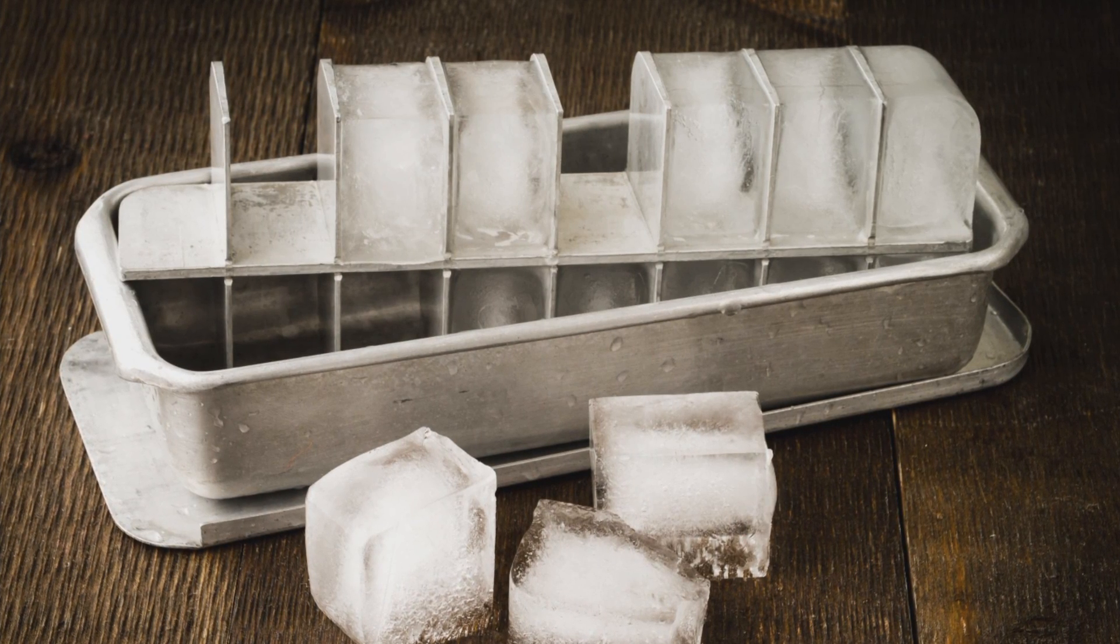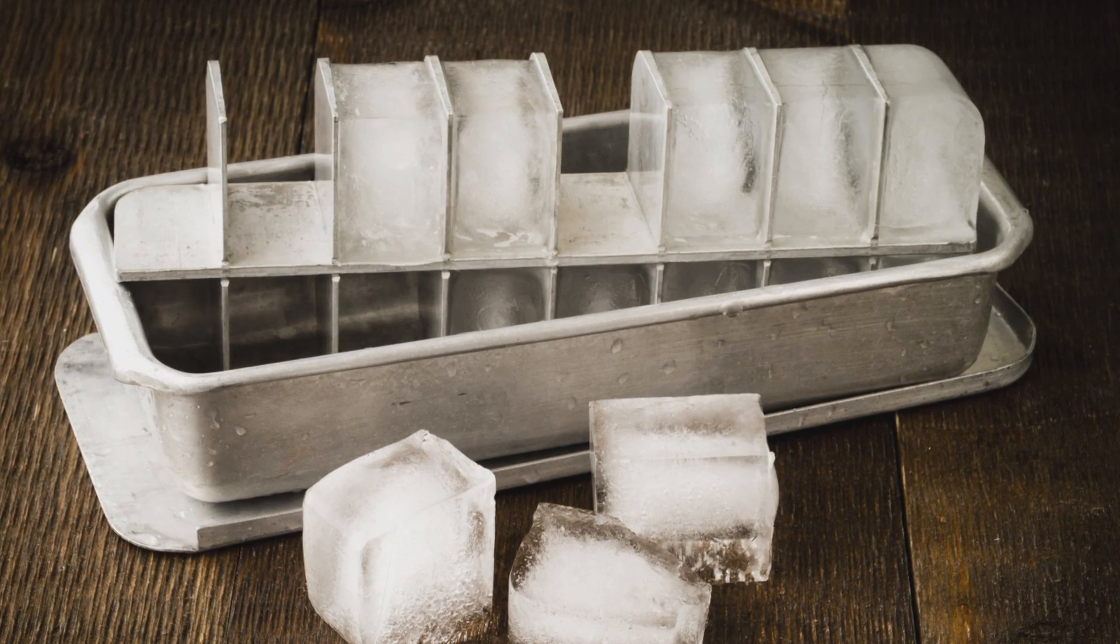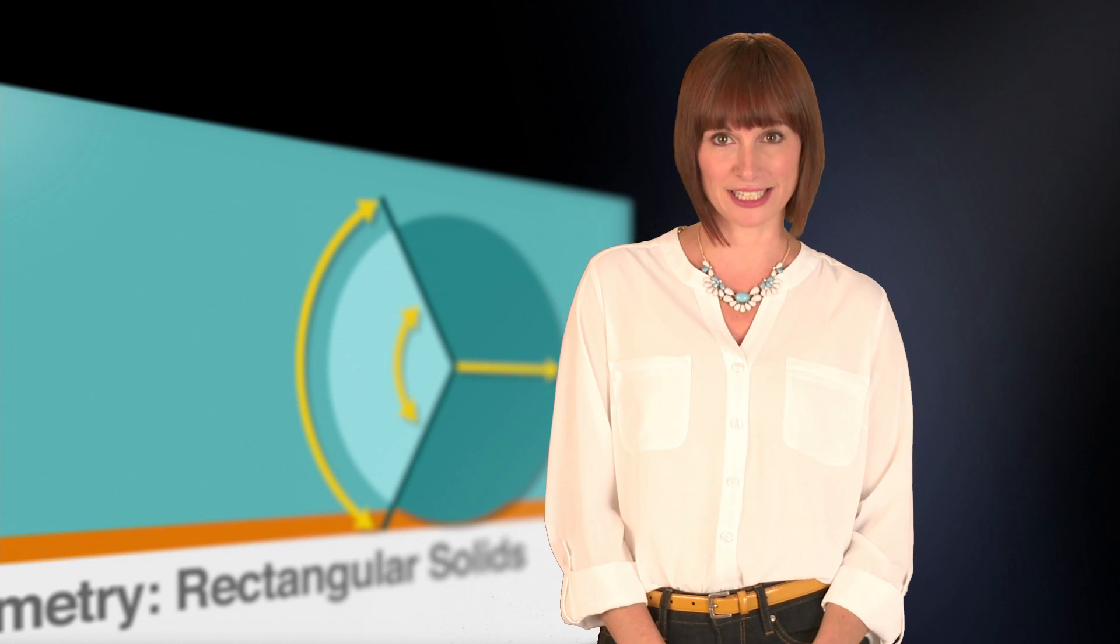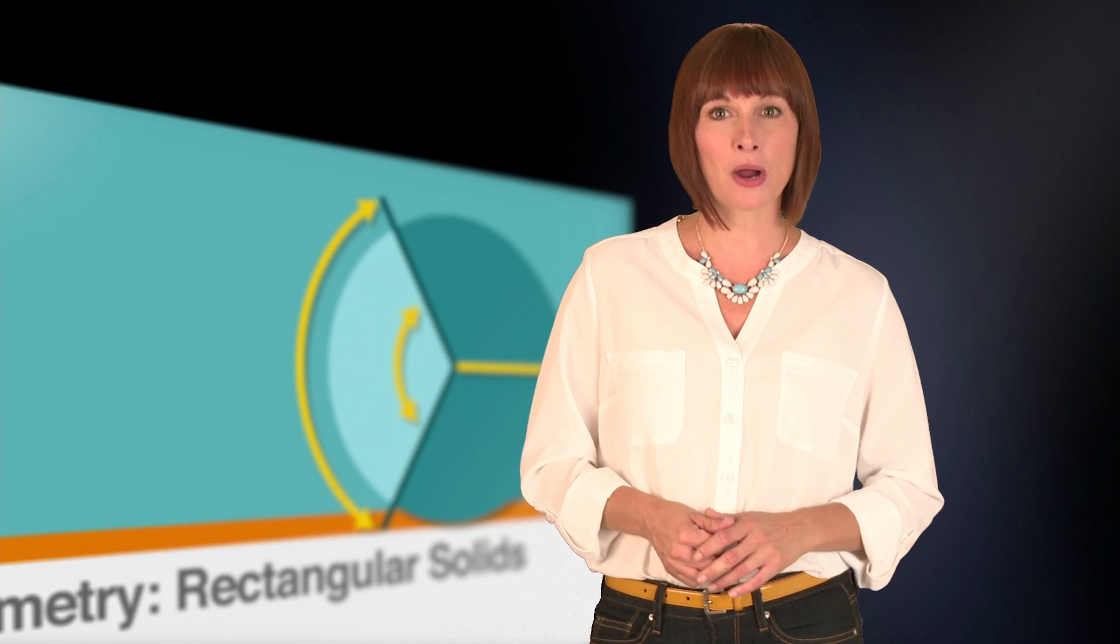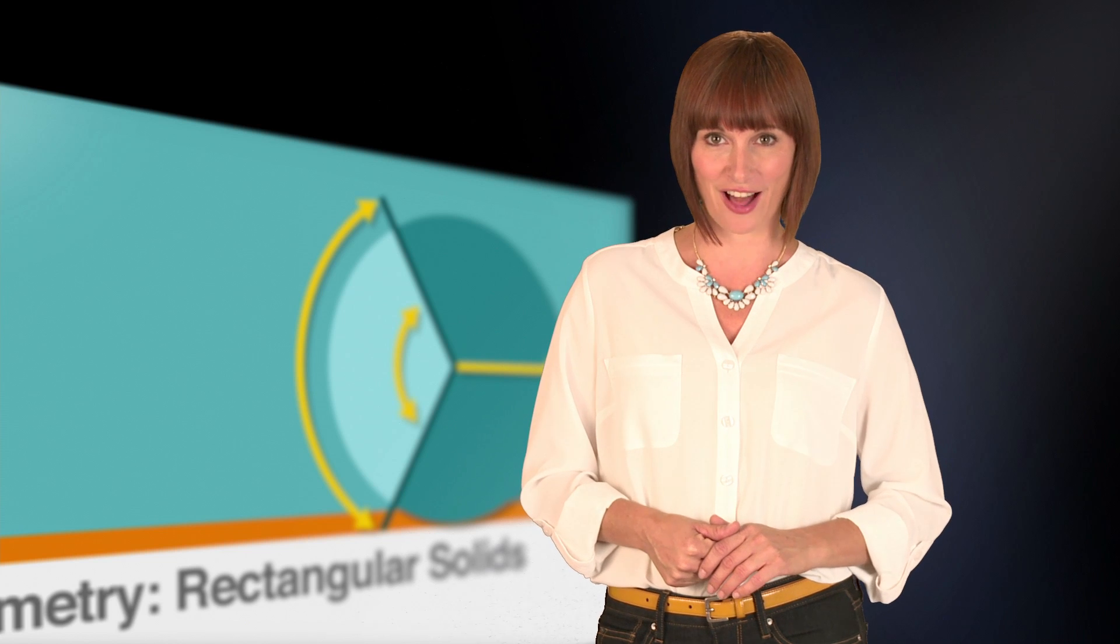Now let's talk about the coolest rectangular solid, the cube. A cube is a special case of rectangular solid, where all of the edges have the same length. The parts of the cube are just like those of any rectangular solid.